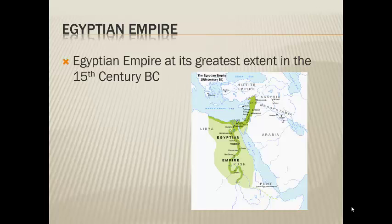Just to give you an example: the Egyptian Empire. This picture is showing Egypt's greatest extent in the 15th century BC — we're tracing this back thousands of years. At the height of its empire, Egypt controlled large areas of northern Africa and the Middle East as we would know them today. This is during the time of the pharaohs, when the pyramids were built — things you may have heard of or studied in other courses.